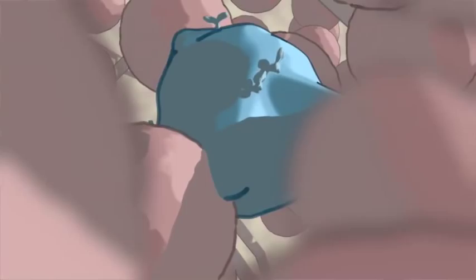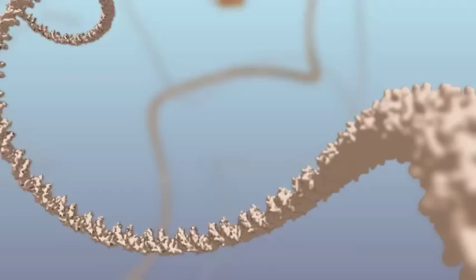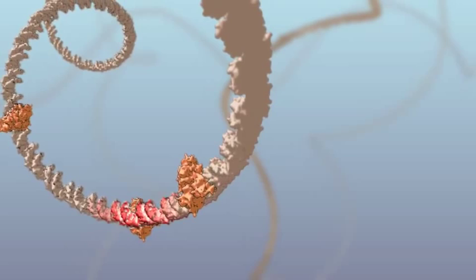The first step in honing this affinity is creation of a germinal center. Then, in the nucleus of this activated B cell, along the gene encoding antibody proteins, the activation induced cytidine deaminase protein induces point mutations.